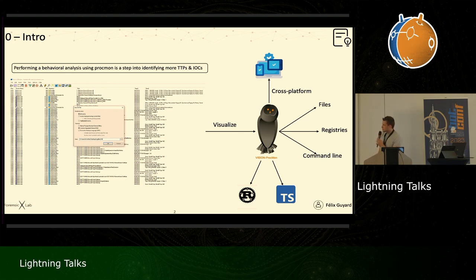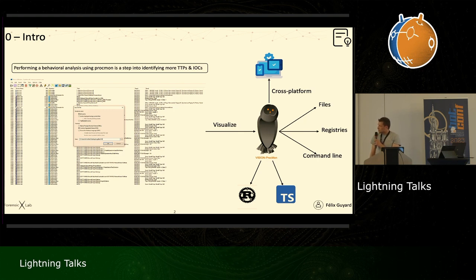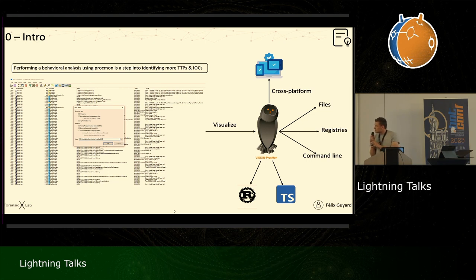The tool uses Tauri, which is a cross-platform desktop application building framework with Rust in the backend and JavaScript or any framework in the frontend. The goal is to export your Procmon data — that can be millions of lines — and when you have run your malware sample and recorded activities with Procmon, you can export it as CSV and import it into the visualization tool.